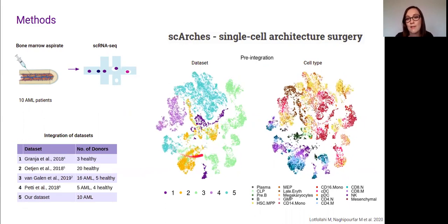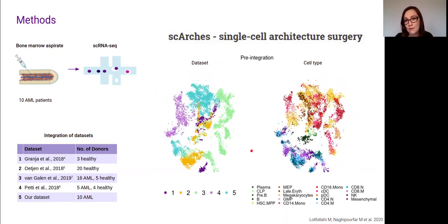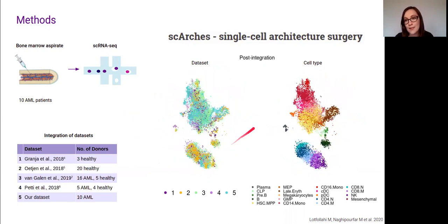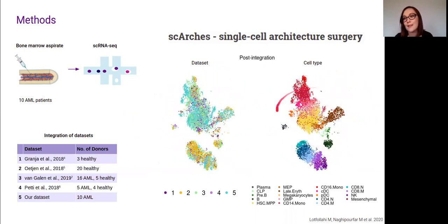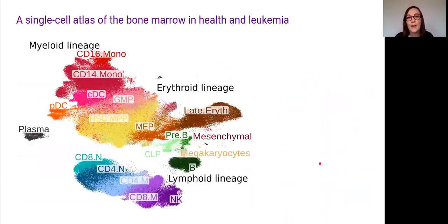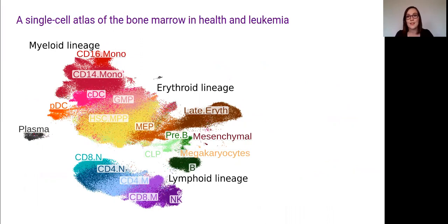You can see pre-integration the cells are clustering by dataset, and then after integration the datasets are mixed and the cells are instead clustering by cell type. Our combined dataset consists of around 340,000 cells from 63 different donors. We've managed to identify 19 different cell types, including the HSC population and then multiple different myeloid, lymphoid, and erythroid lineage cells.